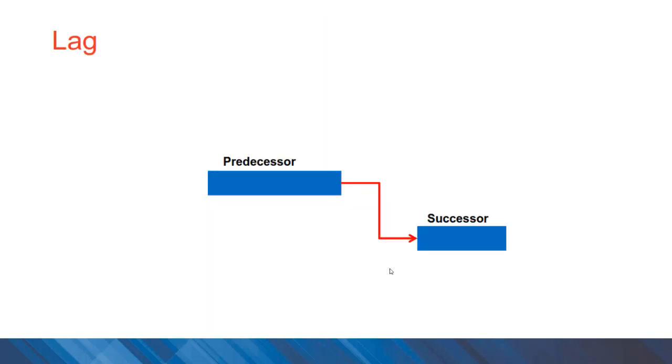The concept of lag is important in network scheduling. We have waiting time or idle time between certain activities on the project. If you consider a construction project example when you have concreting, there might be a waiting time required for the concrete to set and reach the desirable strengths before the next activity or loading on the concrete can be done.